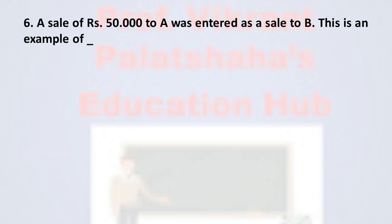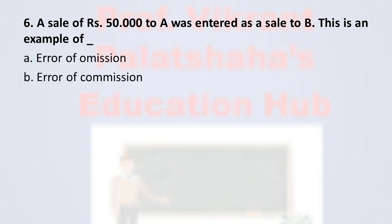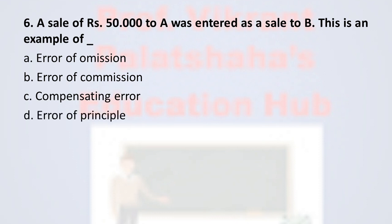Question number six: a sale of rupees 50,000 to A was entered as sale to B. This is an example of — option A error of omission, option B error of commission, option C compensating error, and option D error of principle. The correct option is option B, error of commission.